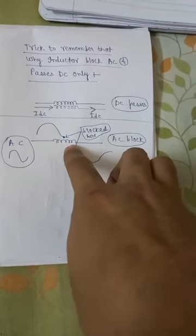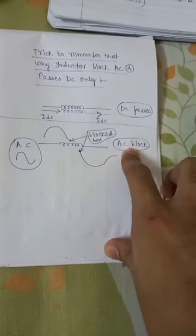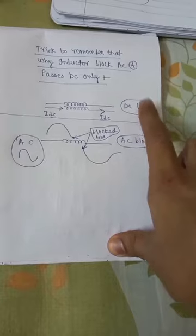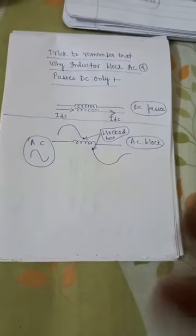But here we see that an interruption has occurred, so AC is blocked here. In this way, we can use this trick to remember that DC passes through the inductor while AC is blocked in the inductor. Thank you.